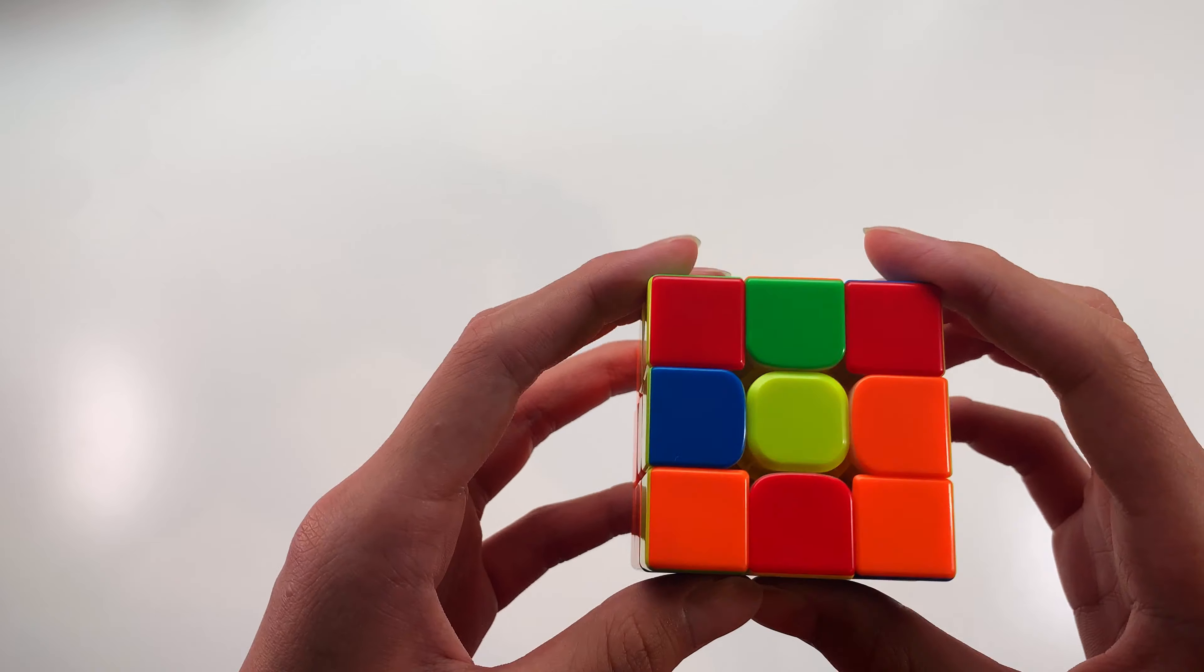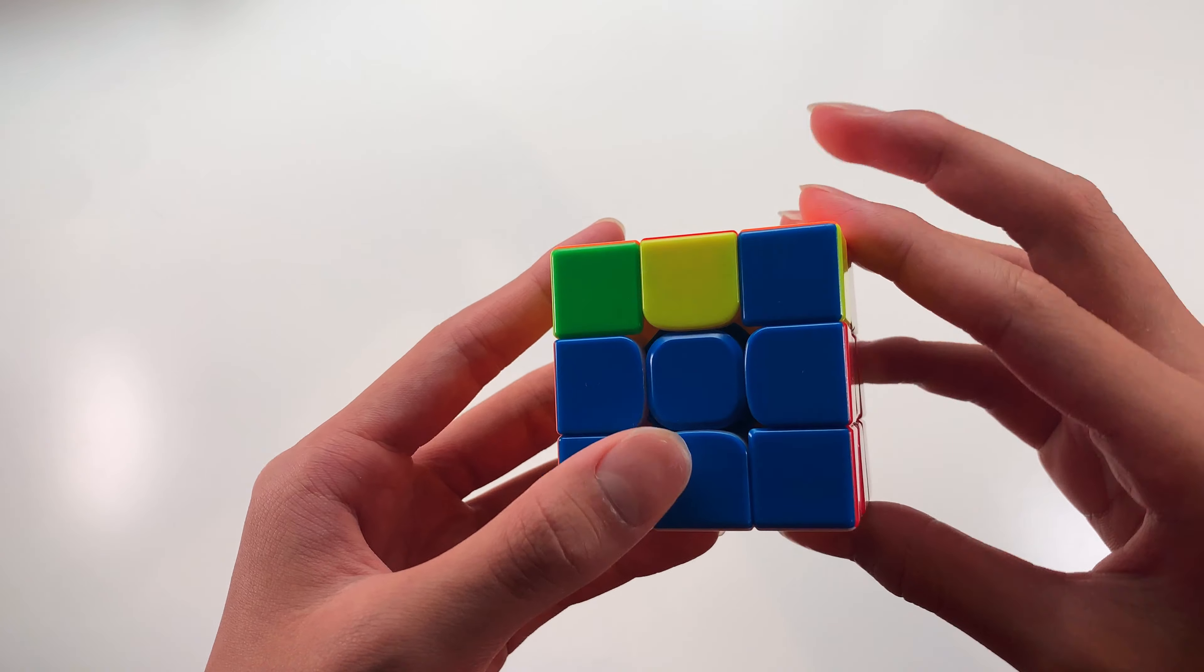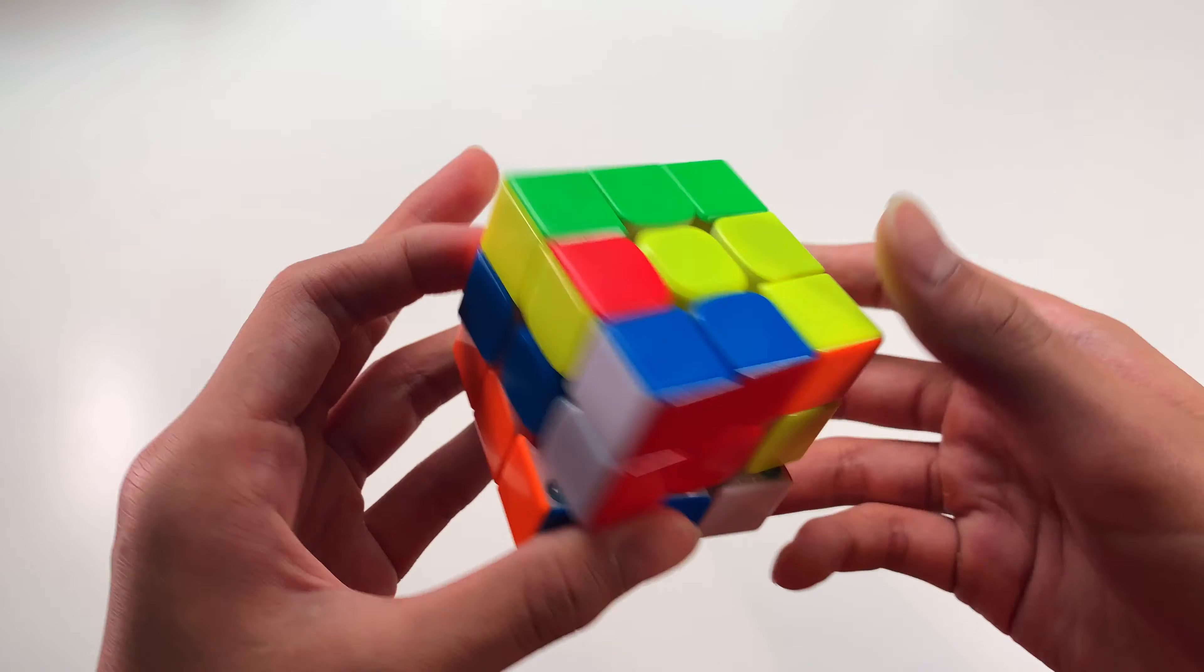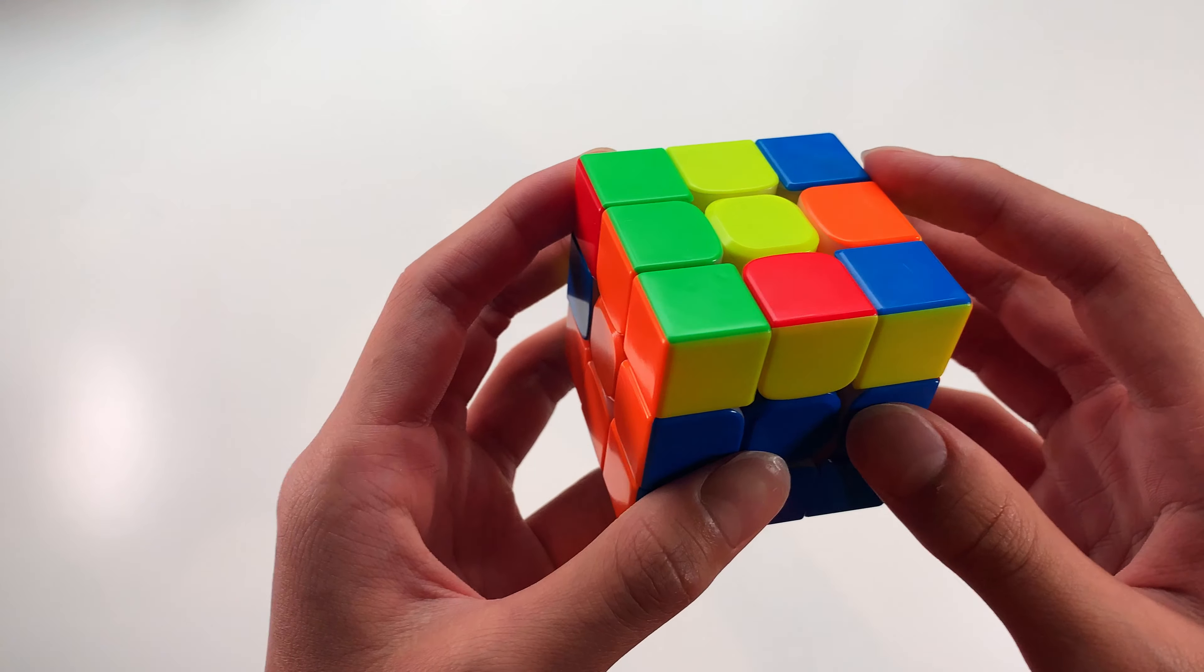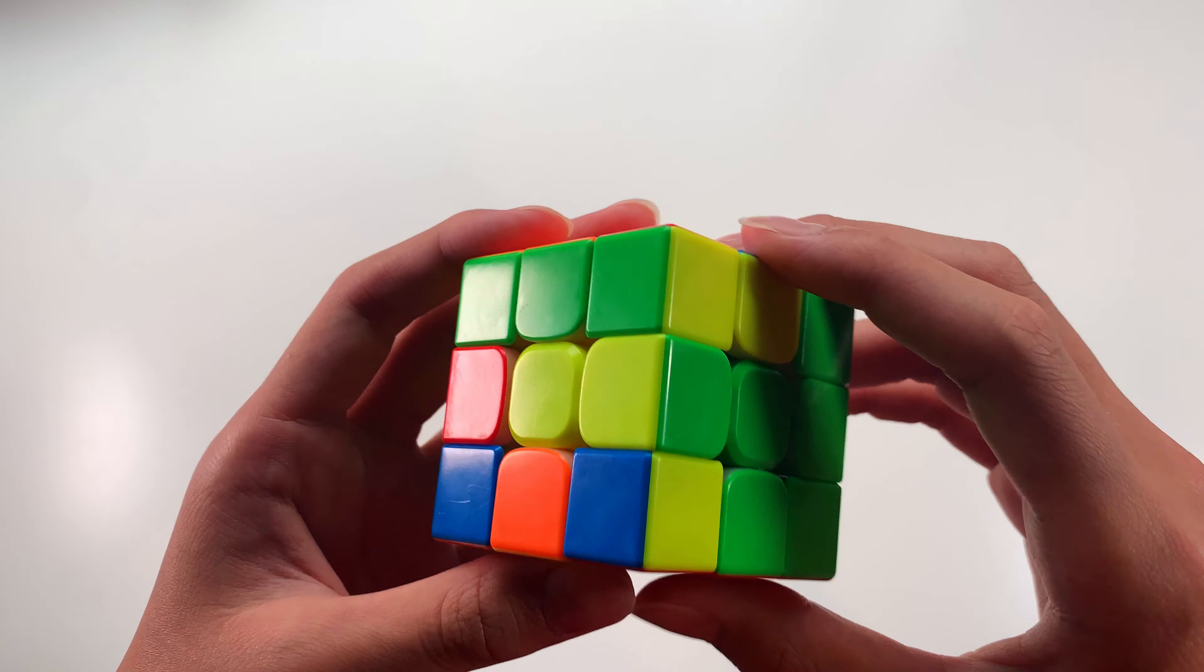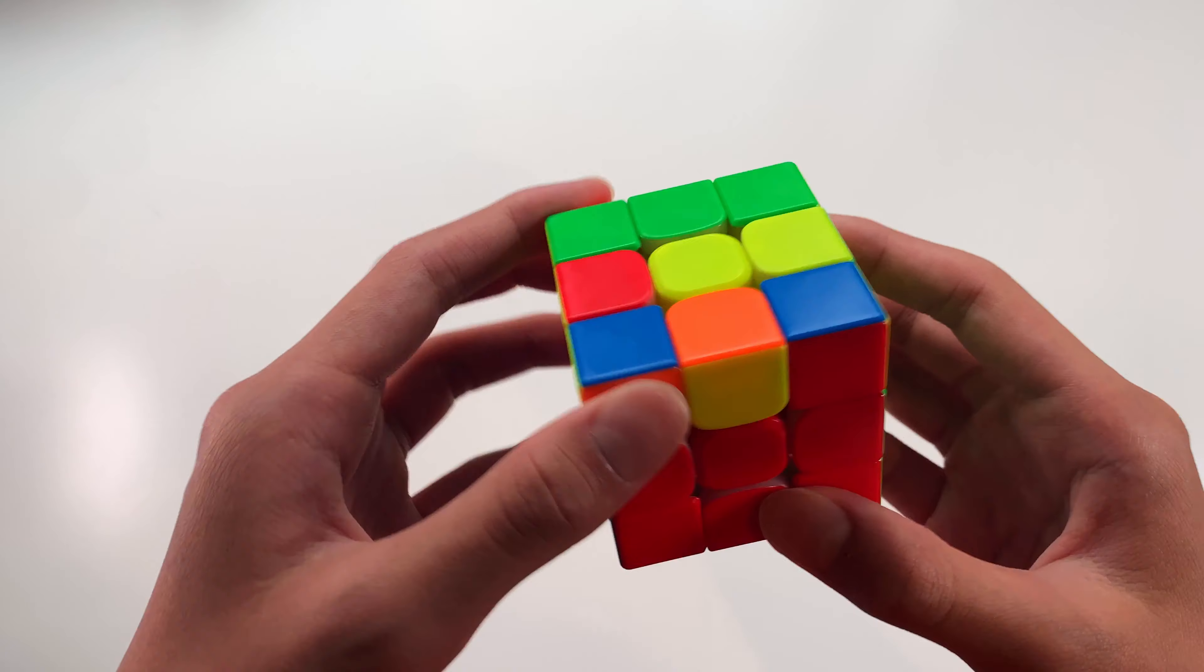Now, if you hold your corner in the back left slot but the colors here do not match, that means that if you do the anti-soon wide, it will make the edge flip so that is not the correct angle. So in this case, what you can do is you can actually rotate to this side such that the corner is in the back right slot and you can do the same algorithm but with your left hand.